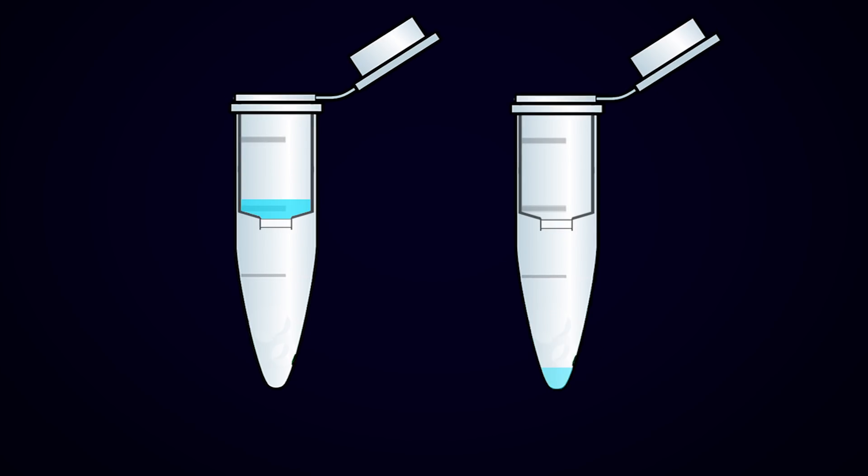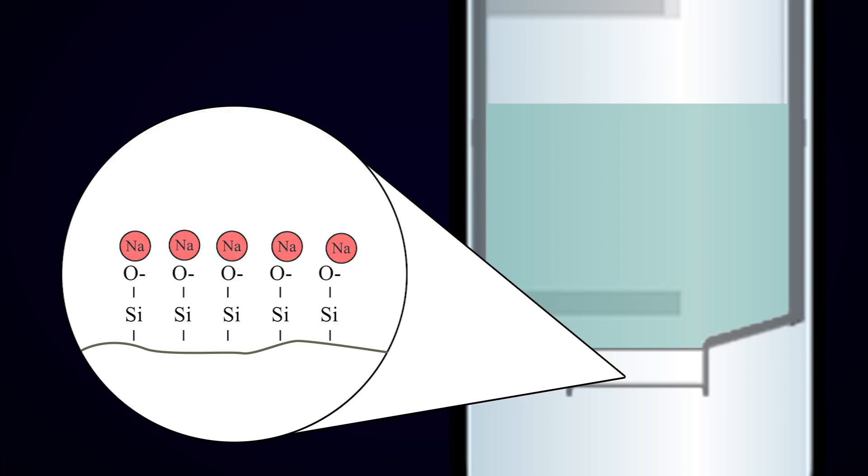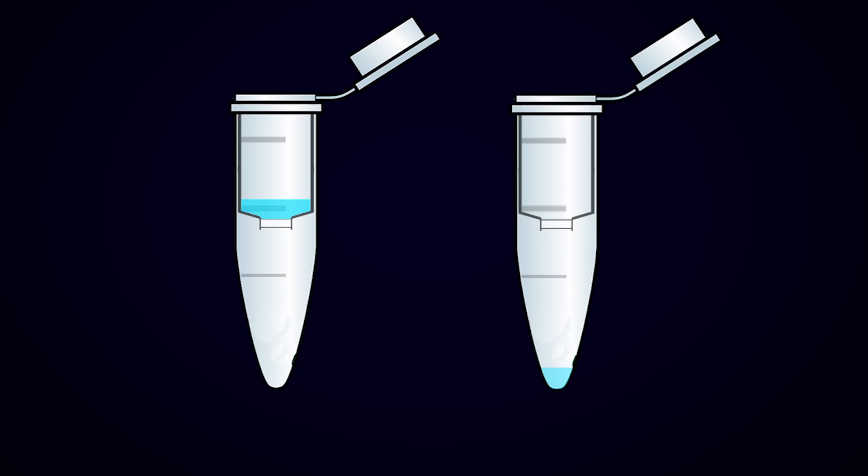We transfer the filter to a clean tube, and then add a small amount of either sterile distilled water or various other solutions, so long as they're not salty. Without the salt, the silica's charges get hidden and the DNA falls off. This time when we spin everything down, we end up with a tiny amount of concentrated DNA solution.